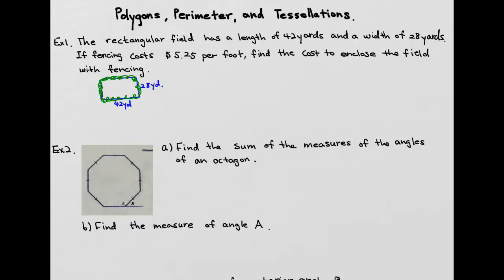It means I need to find the perimeter of that rectangular field. Your perimeter of the rectangle comes from, because you have two lengths and two widths, you're going to do two lengths plus two widths.